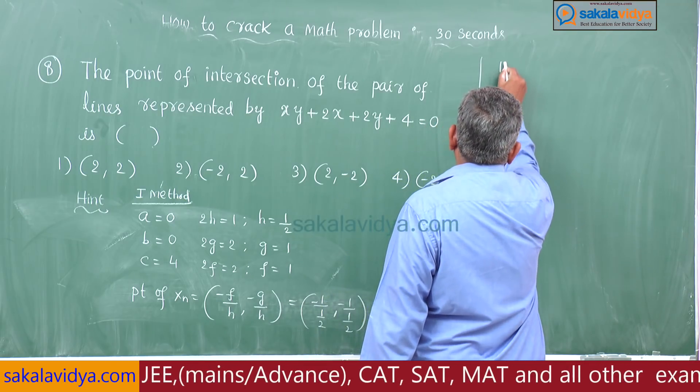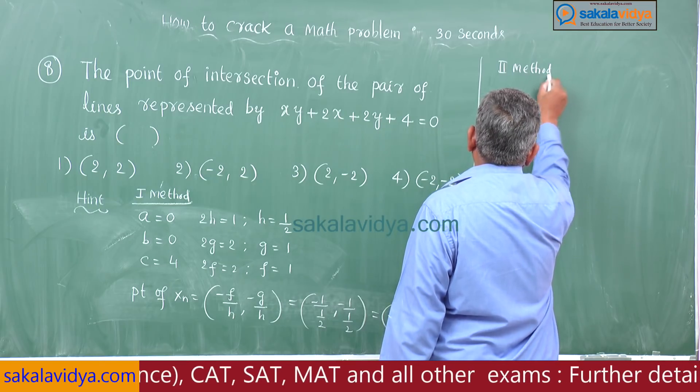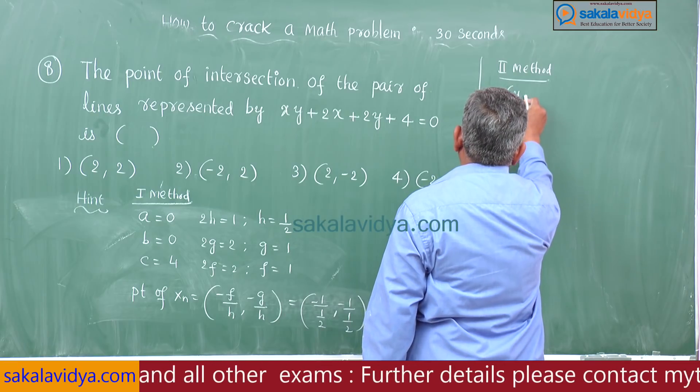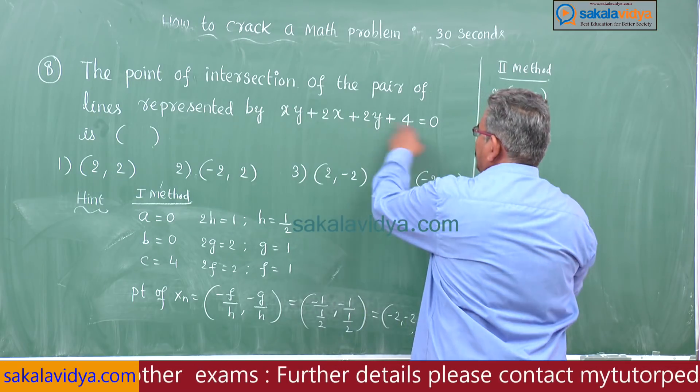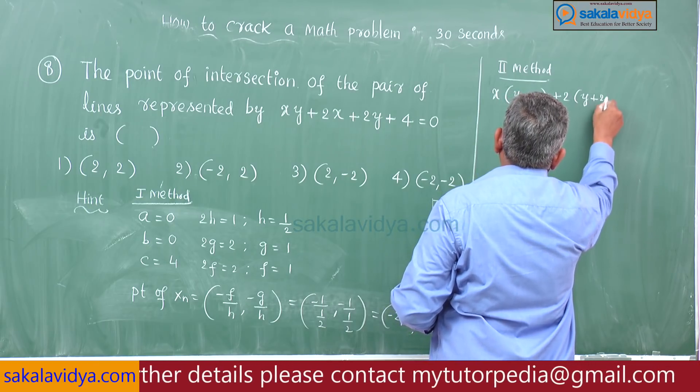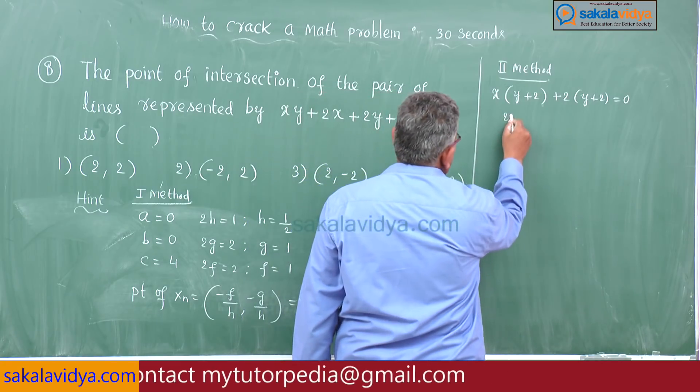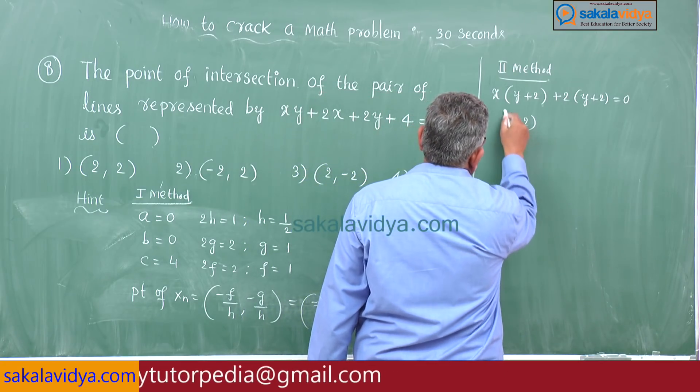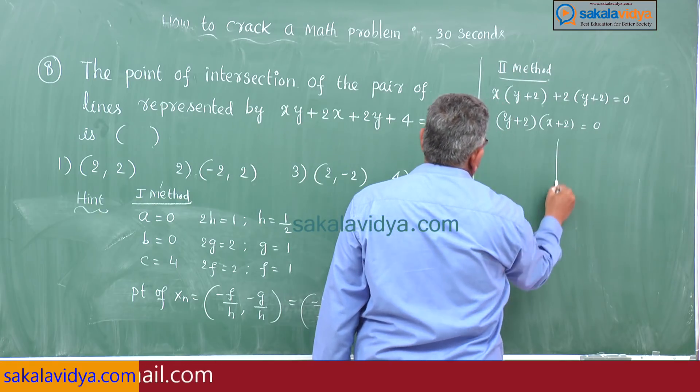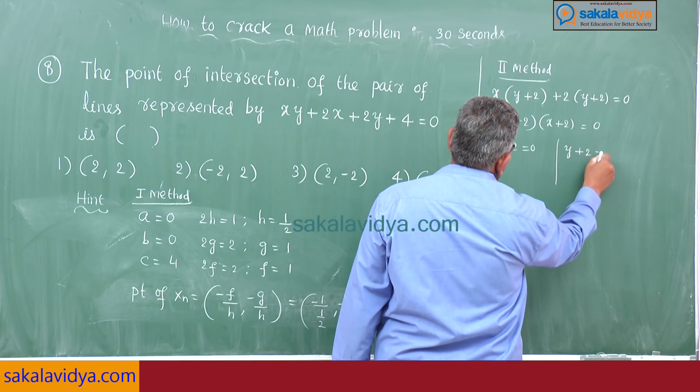Second method: from these two take x common, x into y plus 2. From these two take 2 common, 2 into y plus 2 equals 0. Take y plus 2 common: y plus 2 into x plus 2 equals 0. We get x plus 2 equals 0 and y plus 2 equals 0.